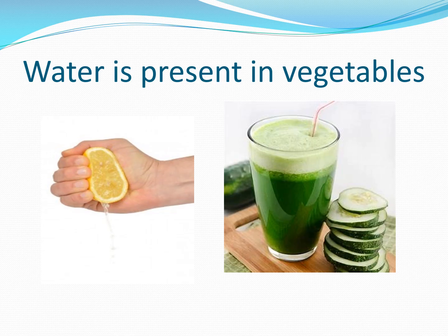Do this under adult supervision. Take a small piece of cucumber, grate it, and squeeze it hard. Take a slice of lemon and squeeze it hard too. What do you see? Juice flows out of the grated cucumber and the lemon slice. This tells us there is water in a cucumber and a lemon — water is present in vegetables too.